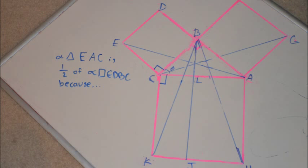The next step is proving that triangle EAC is one half of square EDBC. The base of triangle EAC is EC and the height is DE. This means the area of triangle EAC is EC times DE times one half. The area of square EDBC is just EC times DE. This proves that triangle EAC is one half of square EDBC.